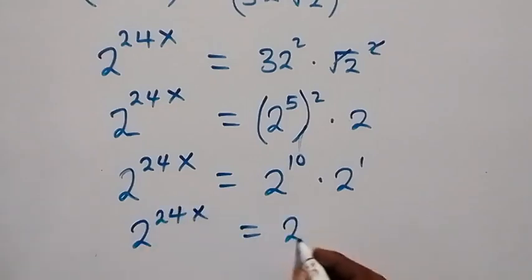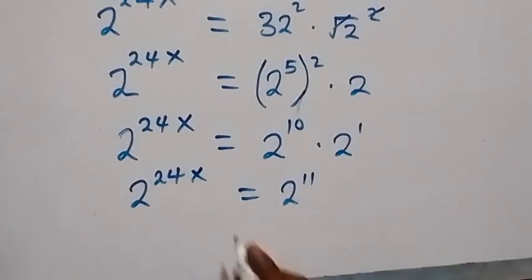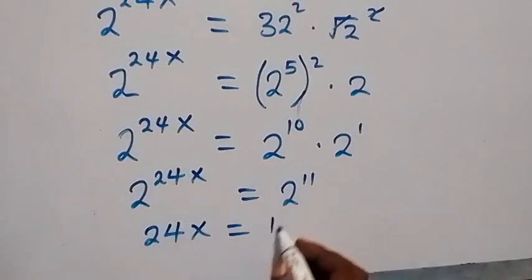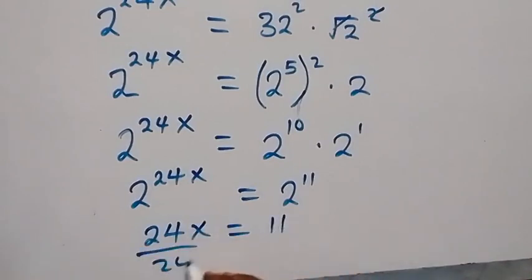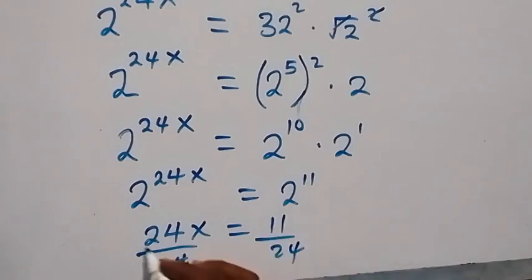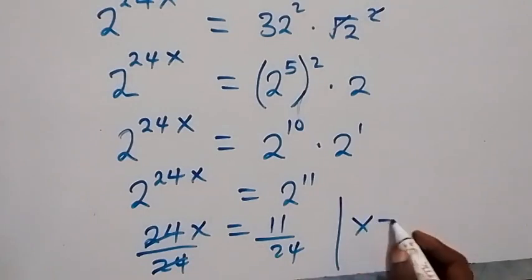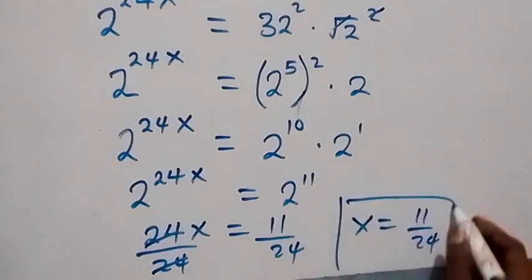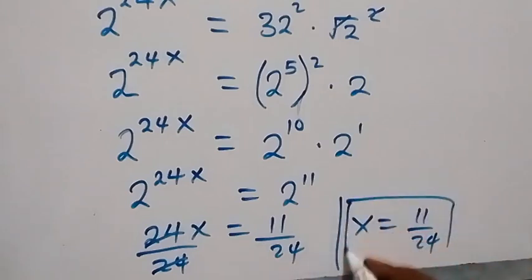This equals 2 raised to power 11. Since the bases are the same, we equate the powers and have 24x equals 11. Dividing both sides by 24, the 24s cancel and we get x equals 11 over 24. So this is the value of x in this problem.